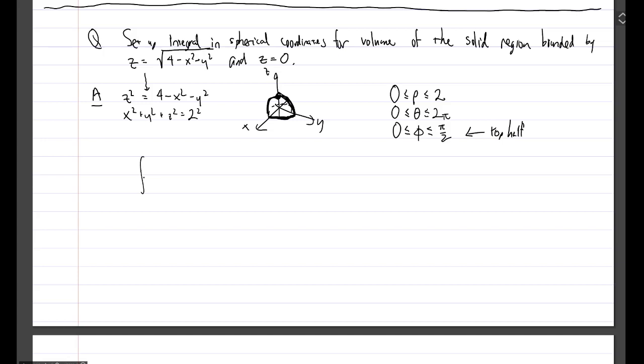So integral sign, integral sign, integral sign. We'd be integrating the function 1. The dv is going to get replaced with ρ squared sine of φ dρ dθ dφ. So ρ we saw just a moment ago goes from 0 to 2. Theta is going to go from 0 to 2 pi.